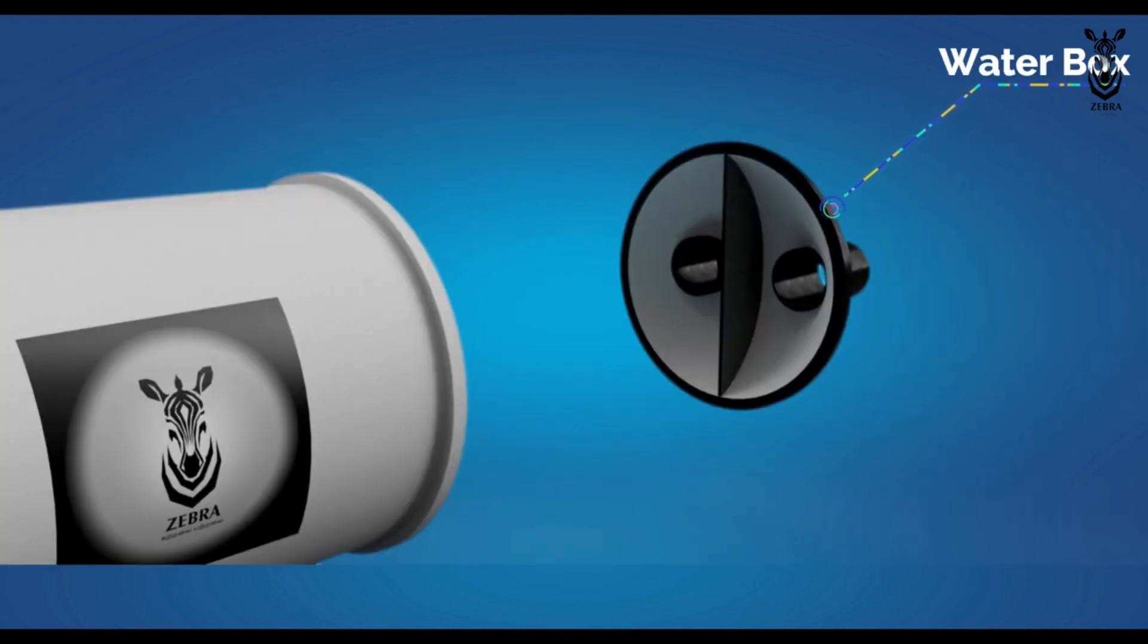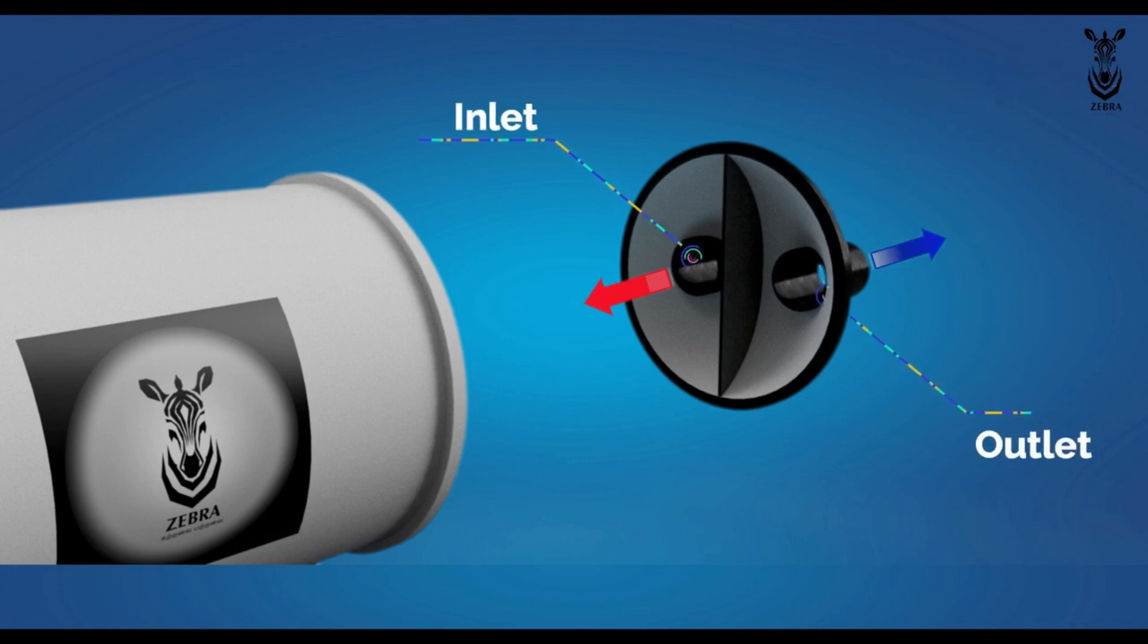This is the water box. Water enters through its inlet and comes out through its outlet. There is a plate in the middle to keep these two waters from mixing. The name of this plate is a baffle.